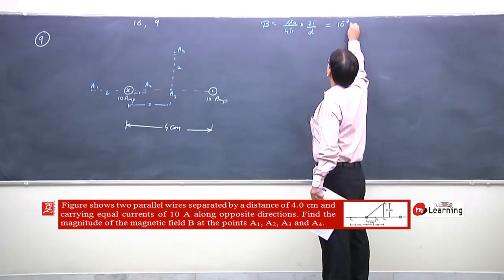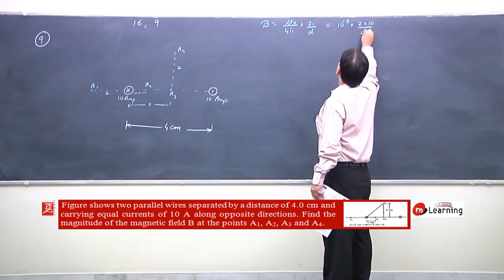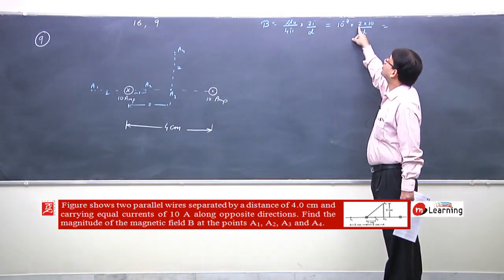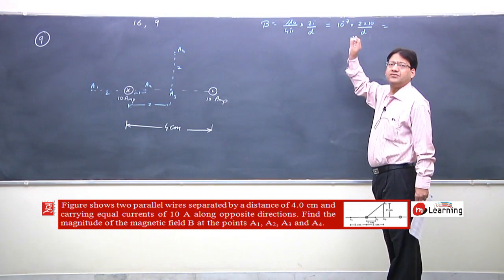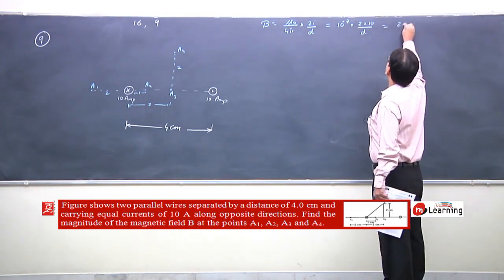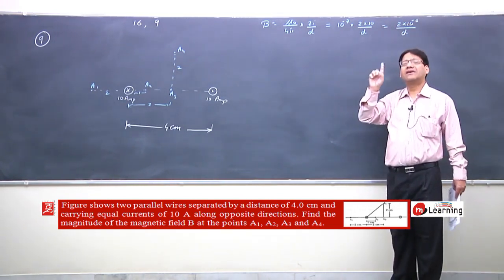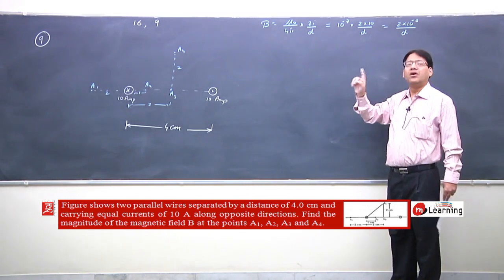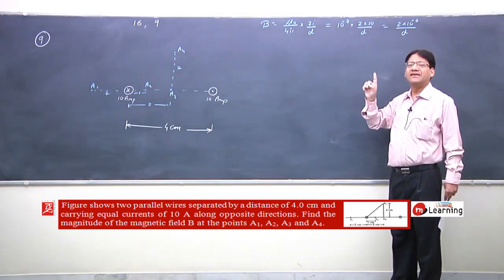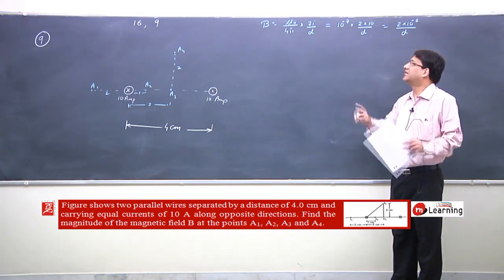The magnetic field formula: B = 10⁻⁷ · 2 × 10 / d = 2 × 10⁻⁶ / d. Since both wires carry current I = 10A, I'll use this for each wire separately, then determine direction and find the net magnetic field at each point.